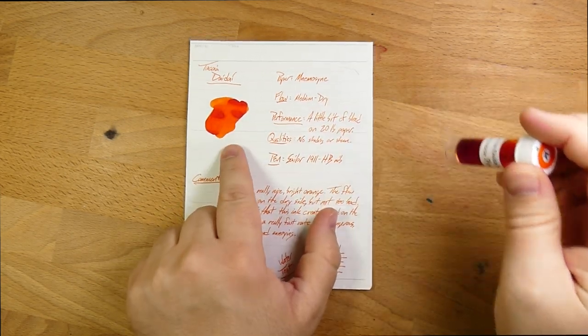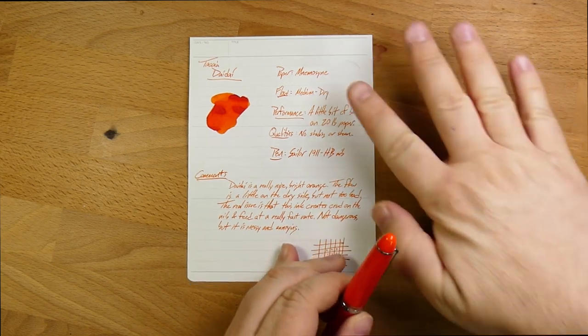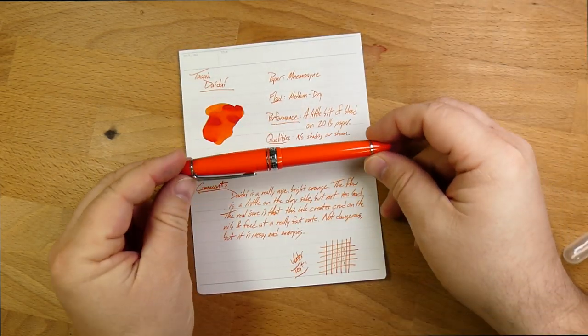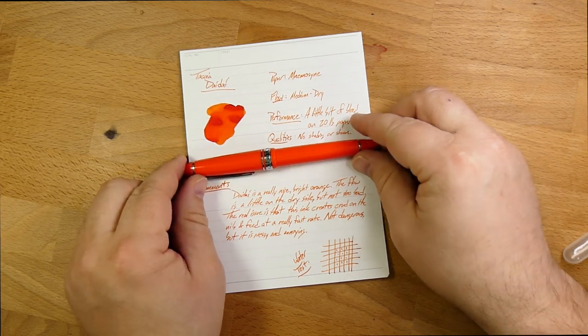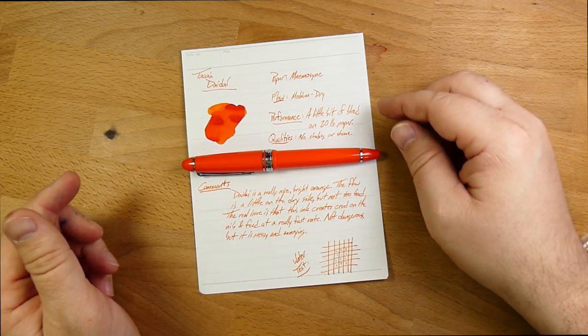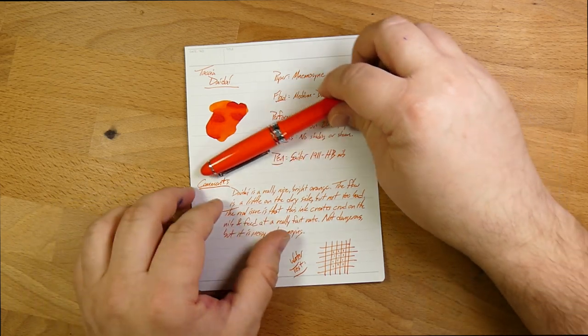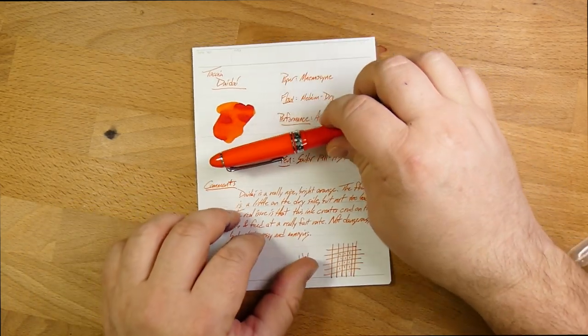This is a very nice bright orange, as you can see here, and I have been using it in this pen. This is the Sailor 1911 Standard in the Royal Tangerine color, and it was really calling out for this ink. Very close to some colors you get in that swatch.